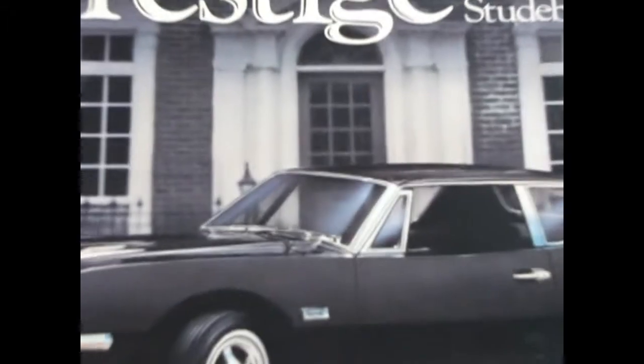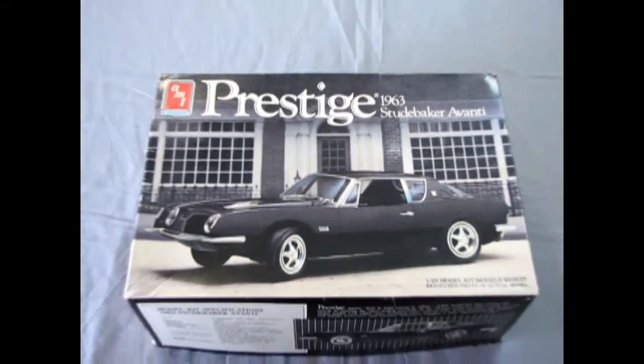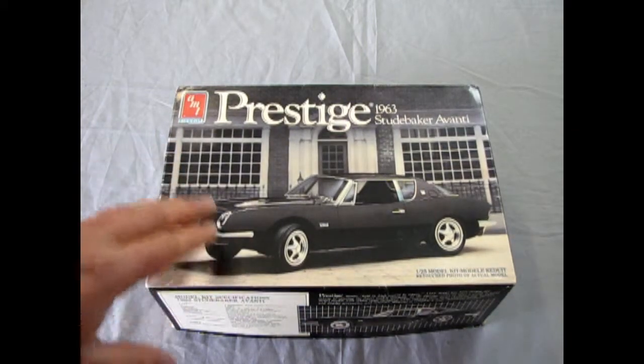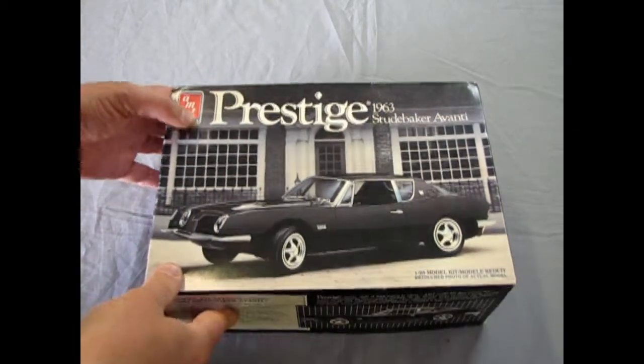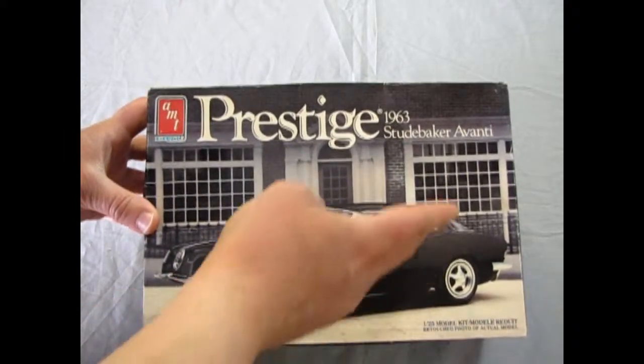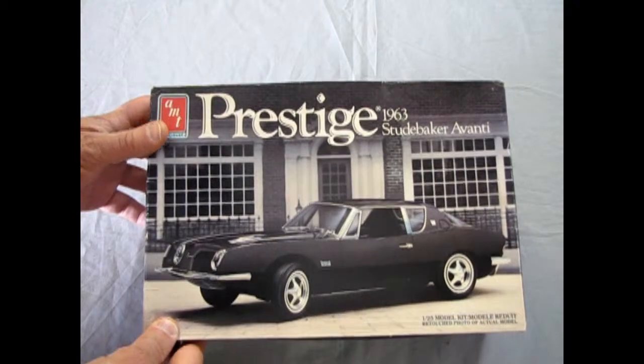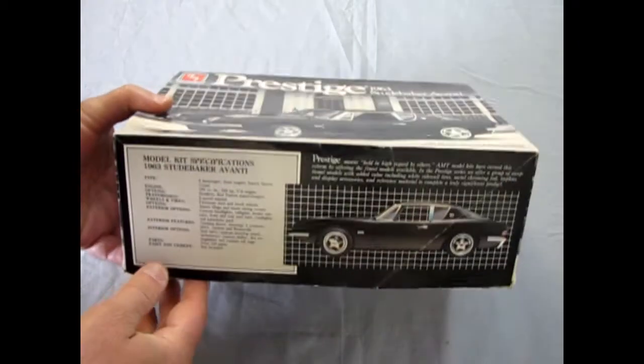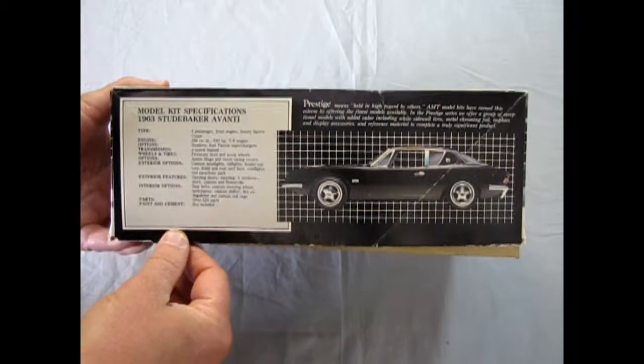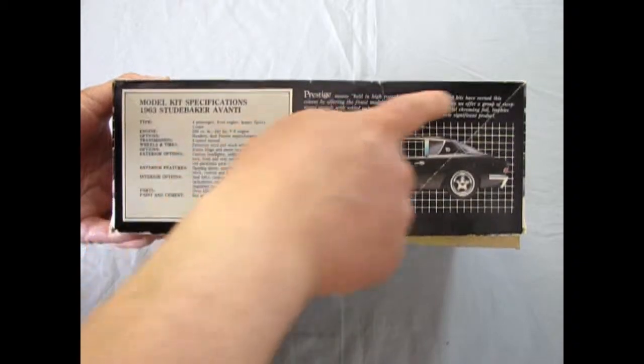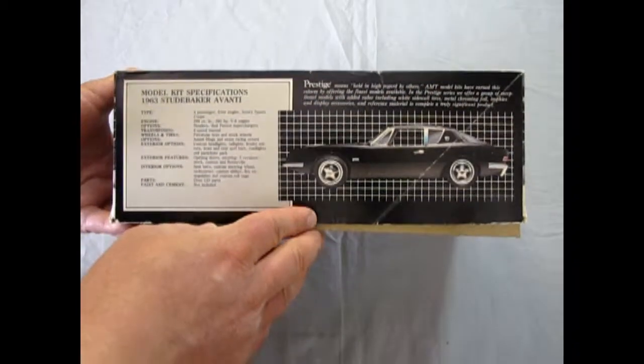And now we look at one of the American independents in this very awesome Prestige Series. This is of course the 1963 Studebaker Avanti, and this is one of my most favorite box art from AMT of all time because you get the nice car sitting in front of a really luxurious, prestigious millionaire's home and all kinds of cool stuff. And this model kit of course has the specifications here and a definition of prestige.